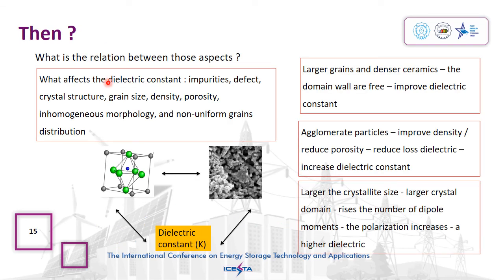The dielectric constant of a material is affected by impurity, defects, grain size, density, porosity, inhomogeneous morphology, and non-uniform grain distribution. Overall, the higher dielectric permittivity of BT from co-precipitation compared to BT from solid state could depend on the agglomerated particles that improve the density and reduce the porosity of the ceramic, in which the density and porosity are affected by the fabrication and sintering process.